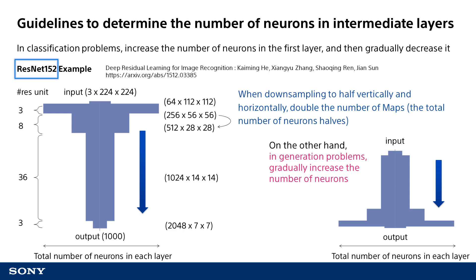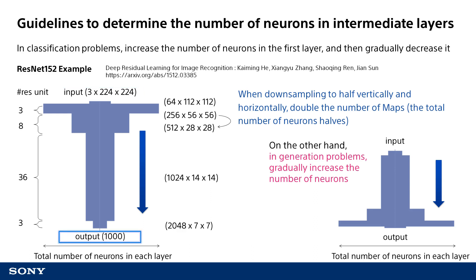This is ResNet-152, the neural network that was used in 2015 to exceed human perceptual performance for the first time in image recognition. The input data is 3 by 224 by 224, which means this is an RGB image that is 224 pixels high and 224 pixels wide. This neural network's output is 1,000 neurons, indicating a variety of categories.